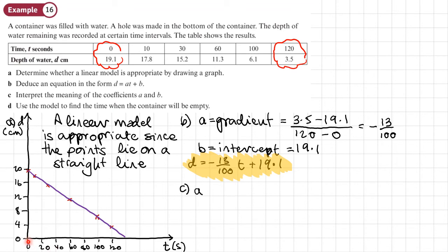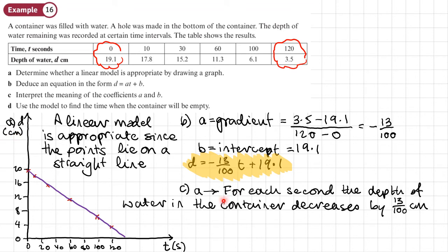So remember, A represents, as this changes by one, the amount that this changes. So you could say for every second, the depth of water goes down or decreases by 13 over 100 centimetres.